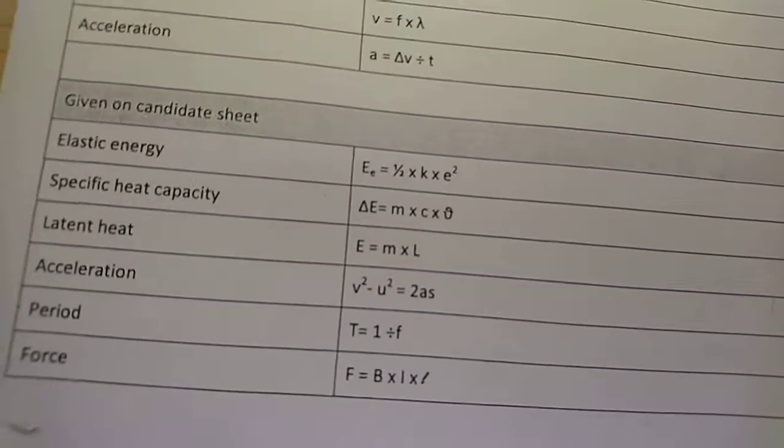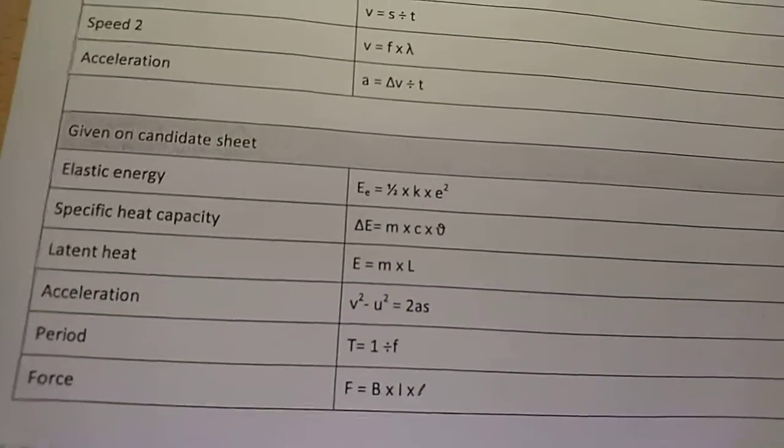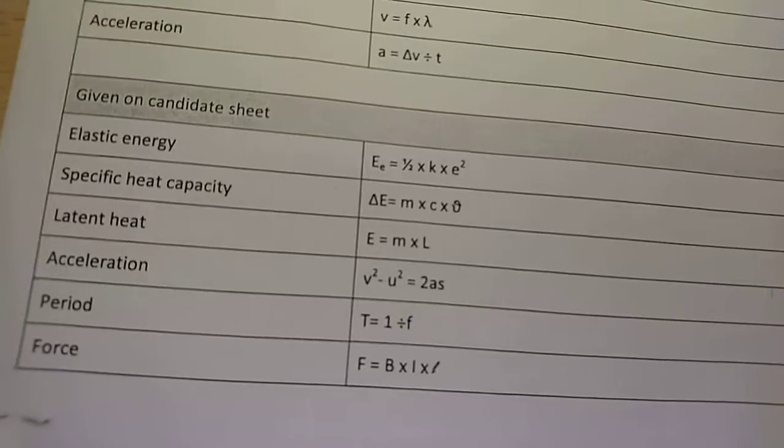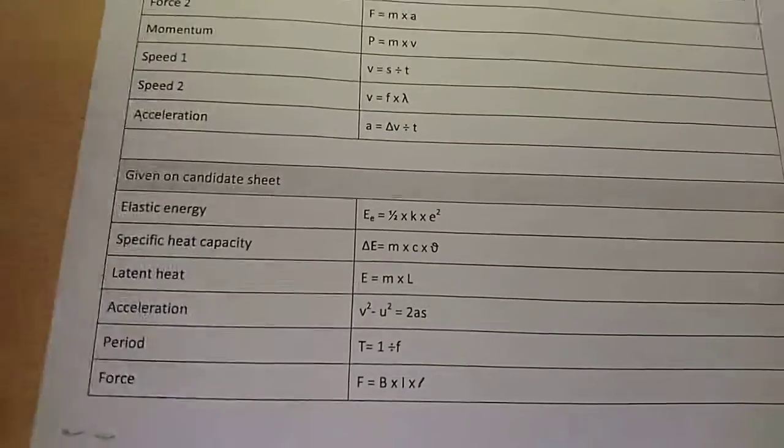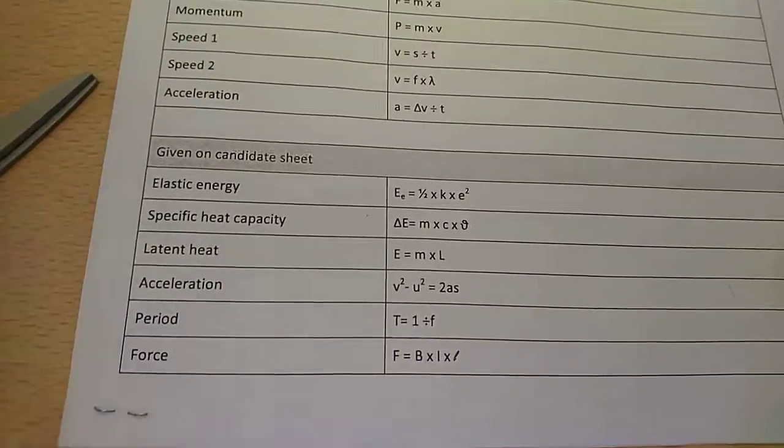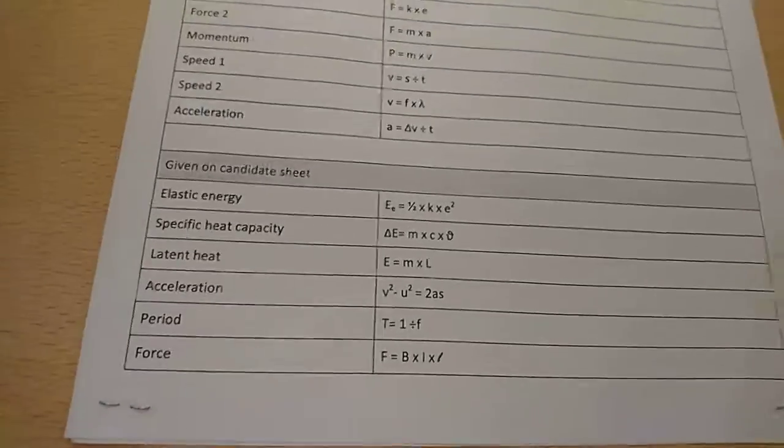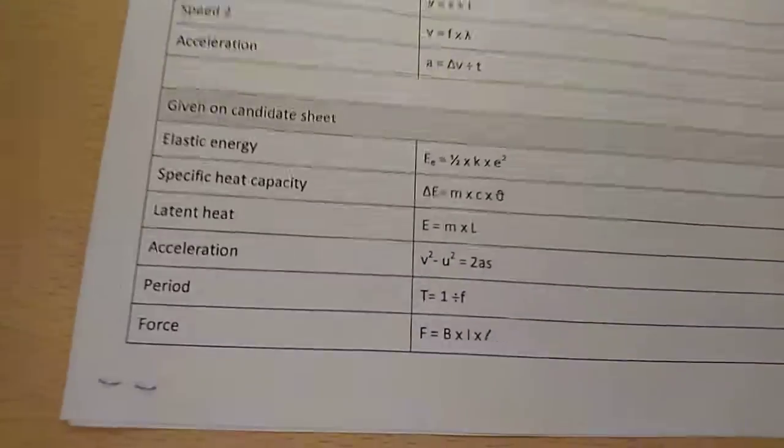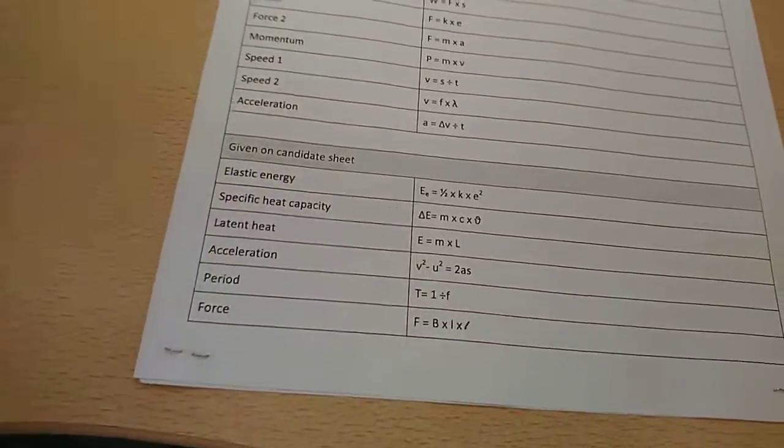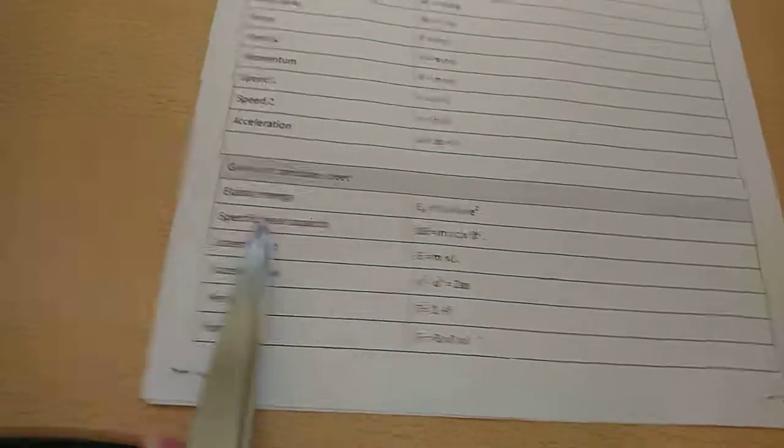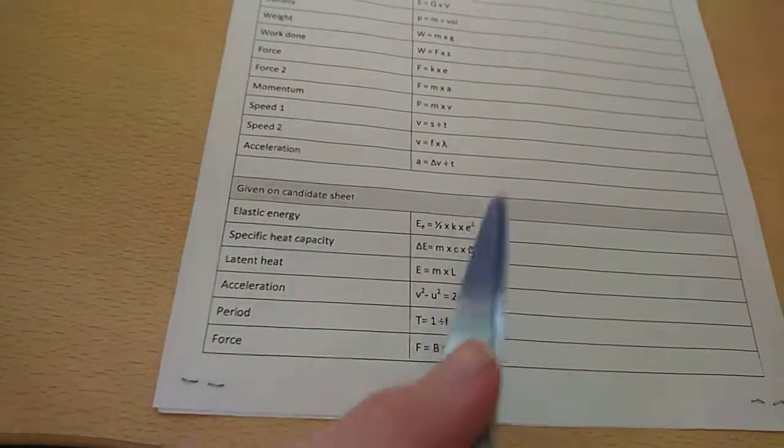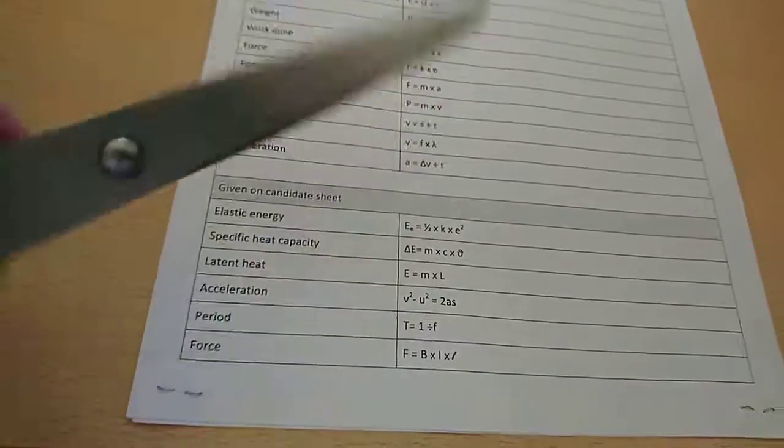And then these are given on the sheet anyway. But we might as well go through them: elastic energy, specific heat capacity, latent heat, acceleration, period, and force. So they'll all be given on the sheet that you're given, so you do not need to know that at all. The only thing you need to know about these is how to rearrange them. You don't actually need to know them off by heart. As with the rest of these, you will have to learn them.